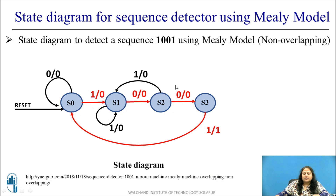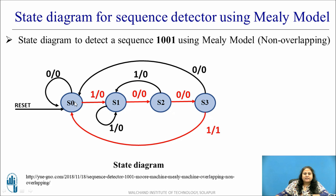Let us assume the incoming bit stream is 1-0-0, reaching state S3. We know that if in S3 a 1 is received, this is the end of the sequence: the output is made 1 and it goes back to S0. But if in S3 a 0 is received — meaning the fourth bit is also 0 — the sequence got broken. So it has to start detecting the sequence right from the first bit; it moves back to the initial state S0 to wait for the first bit, and the output is still 0. Thus this is how the state diagram is obtained for the sequence 1001 using the Mealy model.